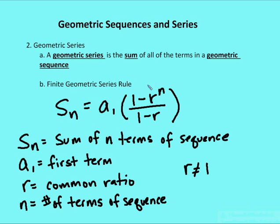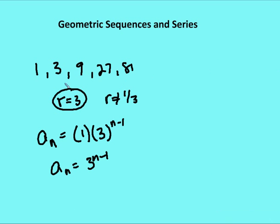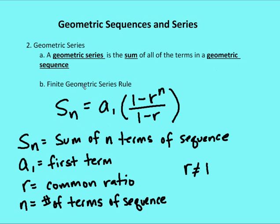Now remember the difference between sequence and series. The sequence is just the terms: one, three, nine, 27, 81. The series is the sum of those terms: one plus three plus nine plus 27 plus 81. The formula for a geometric series is: S sub n equals the first term times one minus the common ratio to the n, over one minus the ratio.